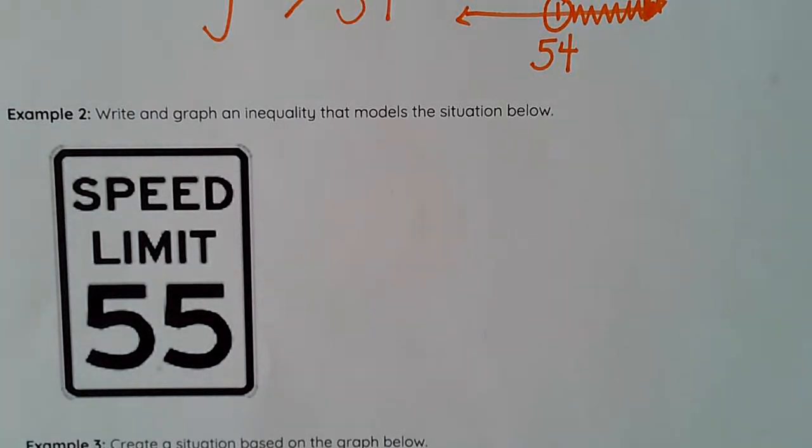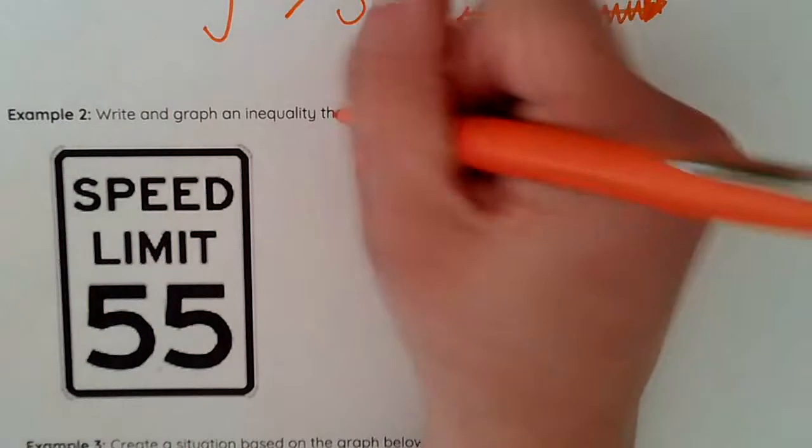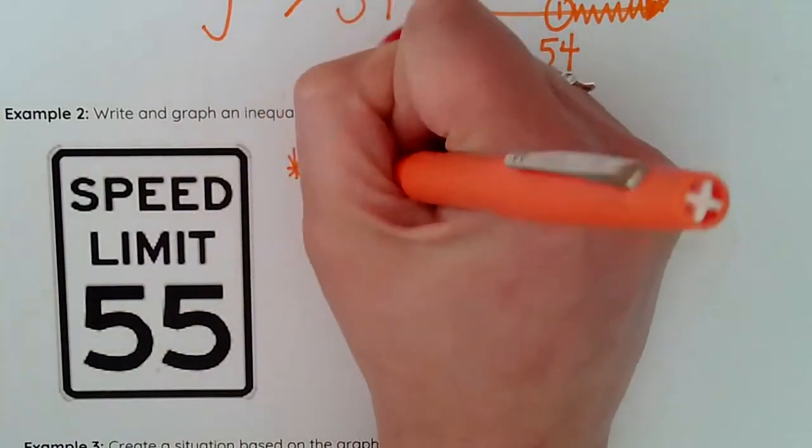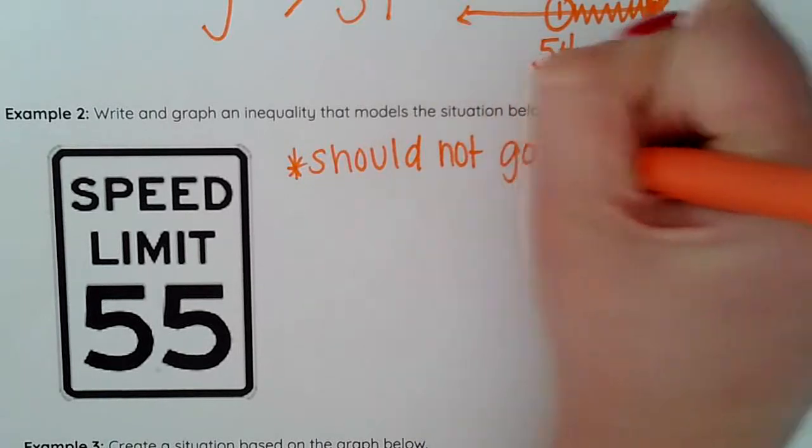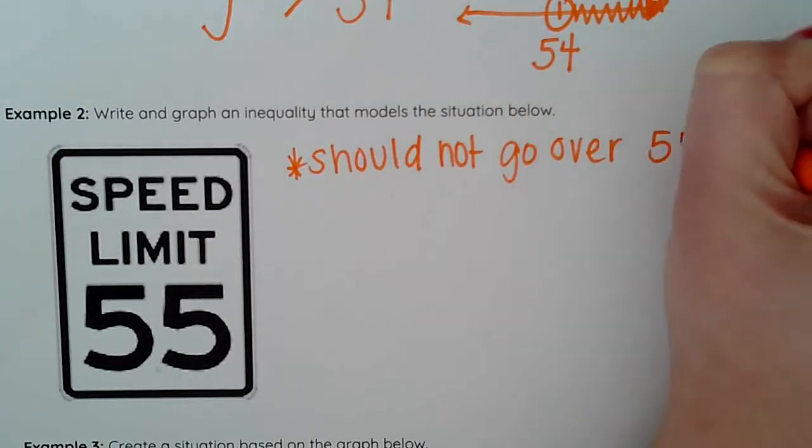Now do I understand that people go over 55 miles per hour? Yes. However the limit is 55. So I should not go over 55 is what my sign is telling me.